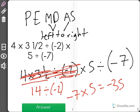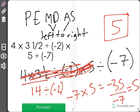So now we have our last step. We just multiplied by 5 to get negative 35, and we have negative 35 divided by negative 7. I know that 35 divided by 7 is equal to 5, and since we have two negative signs, our answer will actually be positive. So the correct answer is 5.